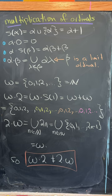Let's recall that if you have an ordinal alpha, its successor is alpha union the set containing alpha, and we generally denote that as alpha plus 1.